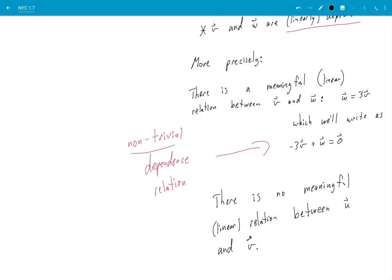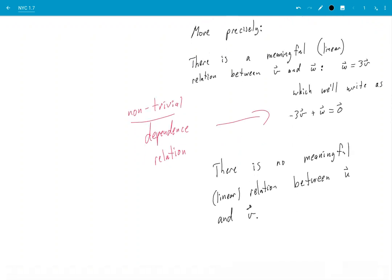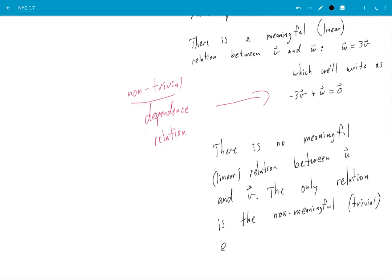I can't say that u is six times v, or I can't write down something like this with non-zero coefficients. So in fact, the only relation is the non-meaningful—we'll use the word 'trivial'—equation.